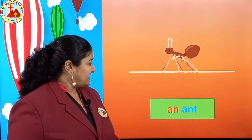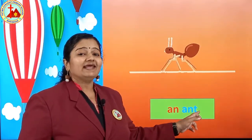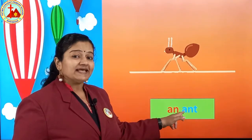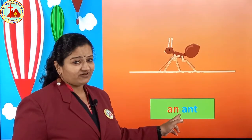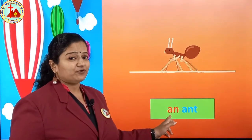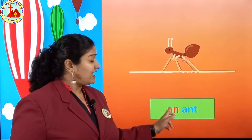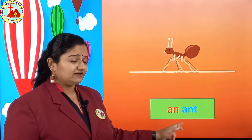Next one is ant. A, N, T — ant. First letter of ant is A. A is a vowel. Then we put AN: an ant. Got it?